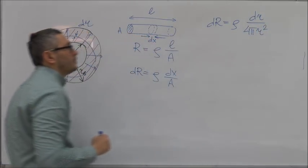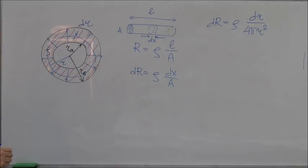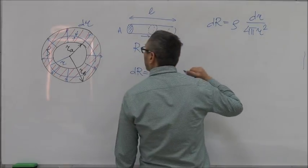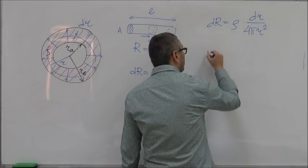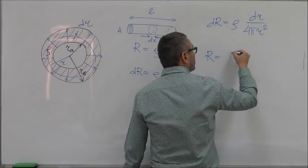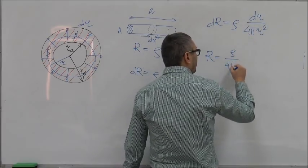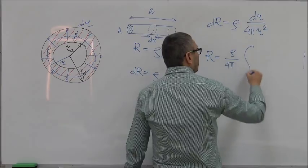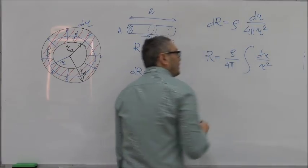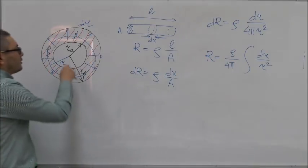Given that, we can now calculate the total resistance of that whole sphere. R is equal to the integral of ρ/(4π) times DR/R², and we integrate from RA, the inner radius, to RB, the outer radius.